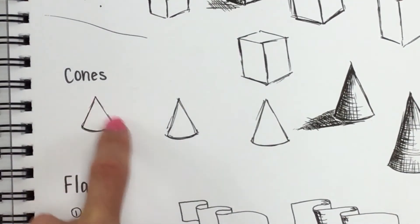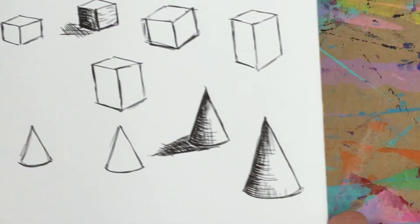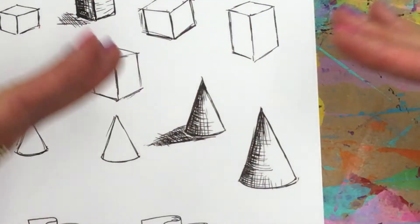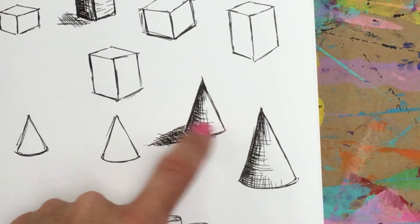Next one we did was cones. The bottom curve is the same as a cylinder, the top is just going to be a triangle. So we use guide points and then the center, and then shading. Remember this is going to go out like a fan and these lines will curve.